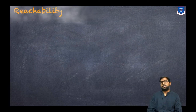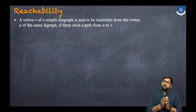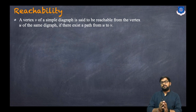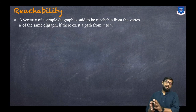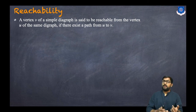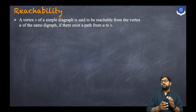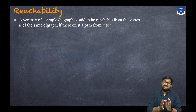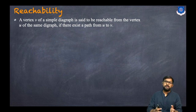First, let us understand reachability. A vertex v of a simple digraph is said to be reachable from the vertex u of the same digraph. Simple means there is no self-loop and no parallel edges, and digraph means we have directions. So v is reachable from u if there exists a path from u to v.